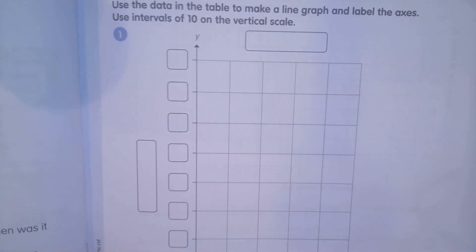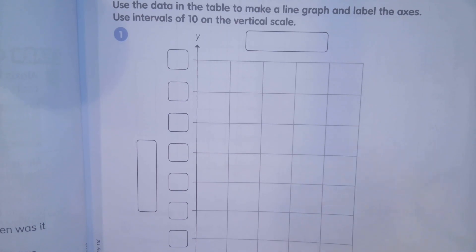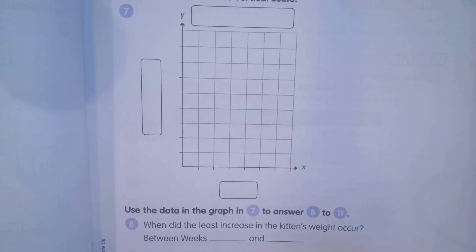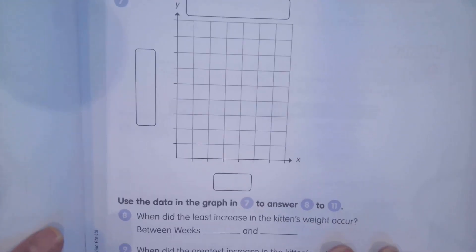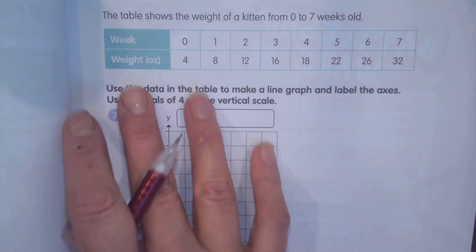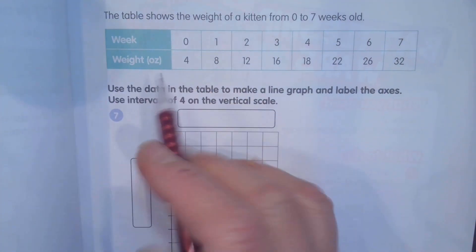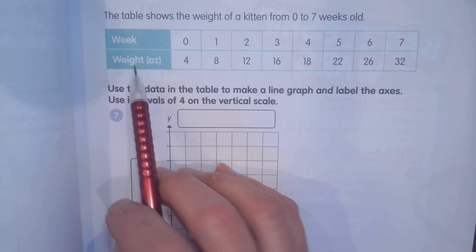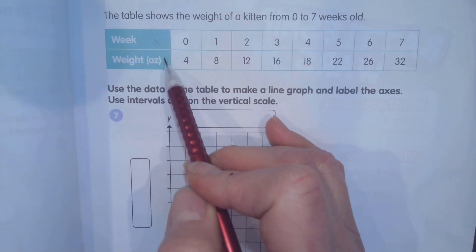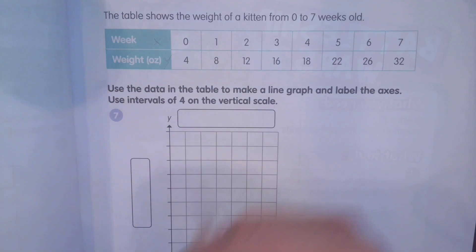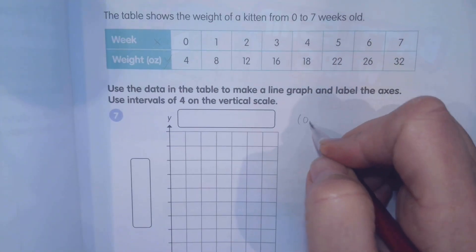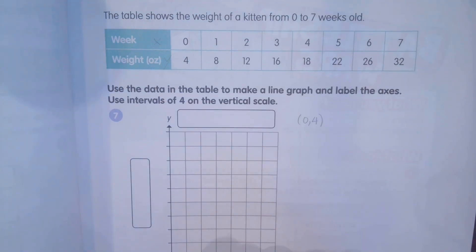All right. Then we can skip to doing this one. So this is the table, variable, and it says the week and the weight. So usually the x is the first thing that they list, and the y is the second thing. So you're going to actually make the coordinate of (0, 4), and then you're going to graph it.